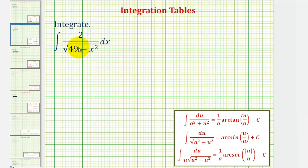We want to find the integral of two divided by the square root of 49 minus x squared, integrated with respect to x.